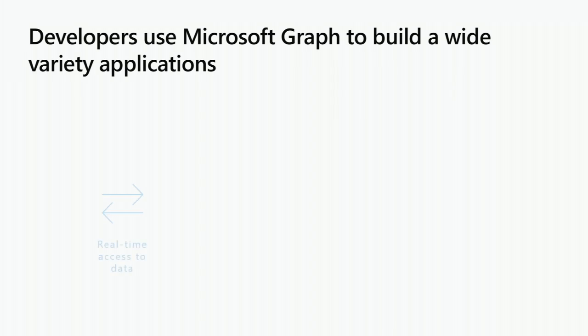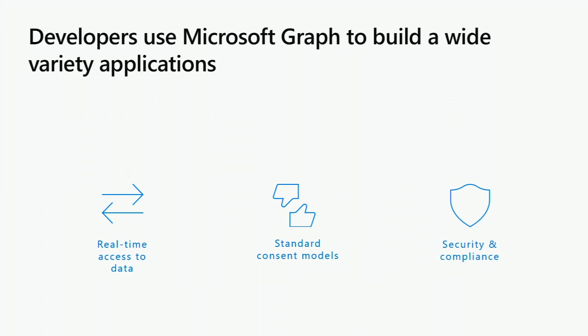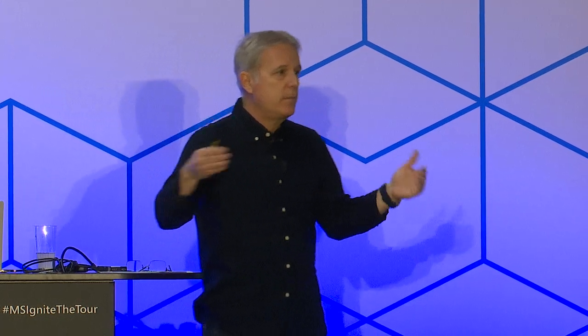Let's look at the ways that developers are using Microsoft Graph. The primary way today is real-time access to data — generating queries as we saw in the Graph Explorer, retrieving filtered datasets in real-time. Consent models are defined in the permissions in Azure portal. Security and compliance are always within the compliance boundaries of my organization's data. Tomorrow, when I talk about the Graph Security API, we'll see how that is enforced despite third-party services being included in the queries.